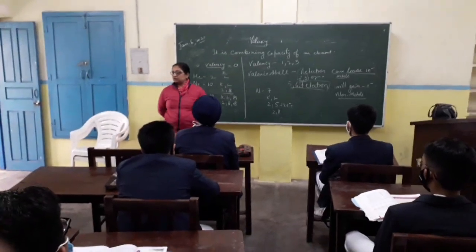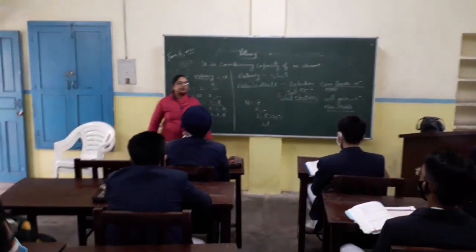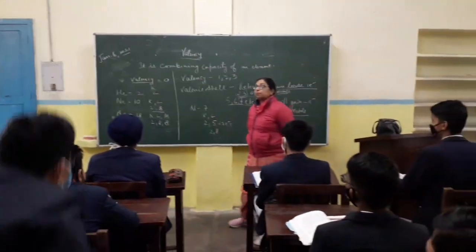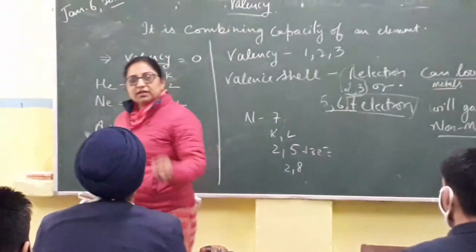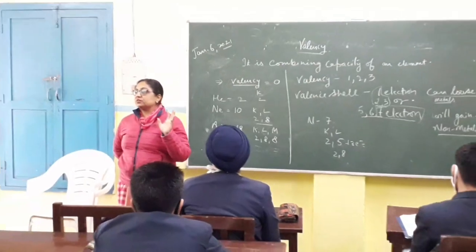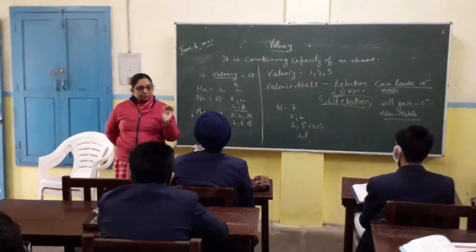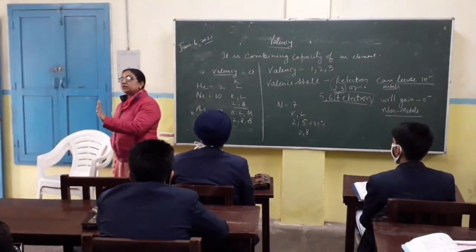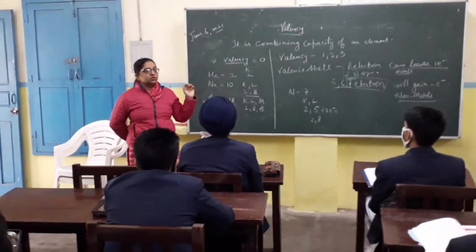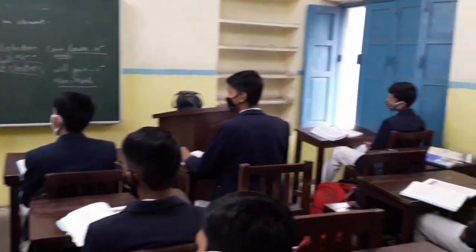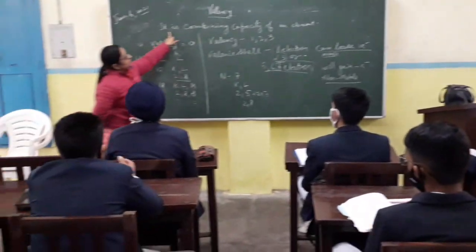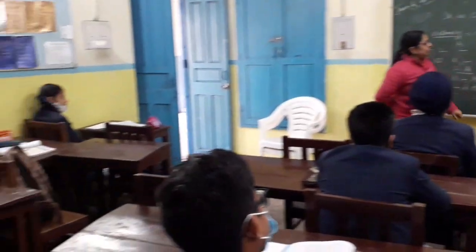What is valency? The combining capacity of an element. Very good. Combining capacity of an element — these two words, combining capacity, tell you everything. Any element that combines with other elements does so on the basis of its valency. This is the definition: it is the combining capacity of an element.